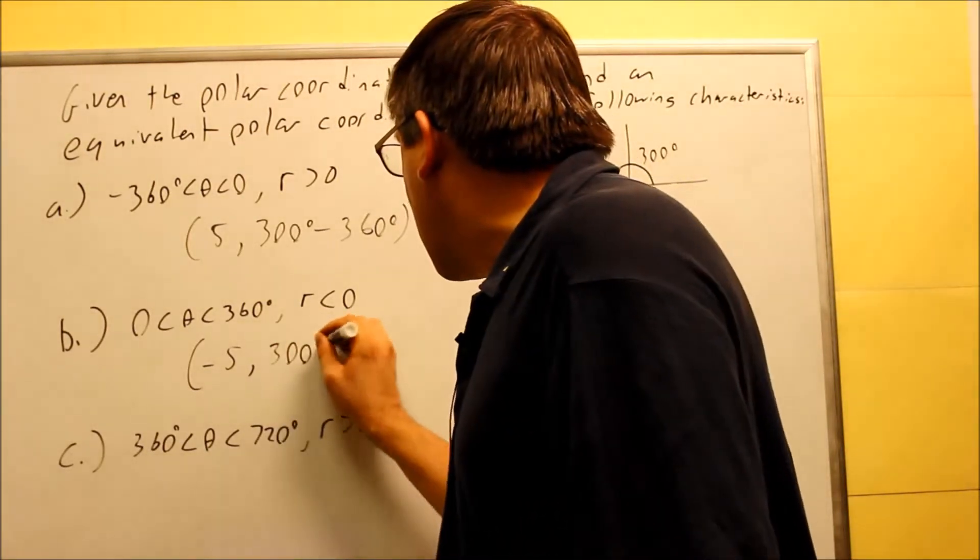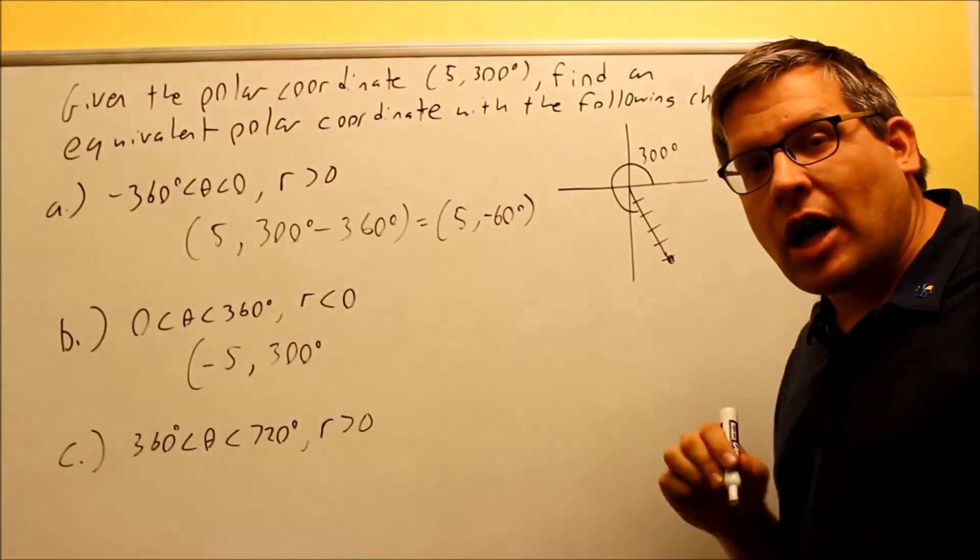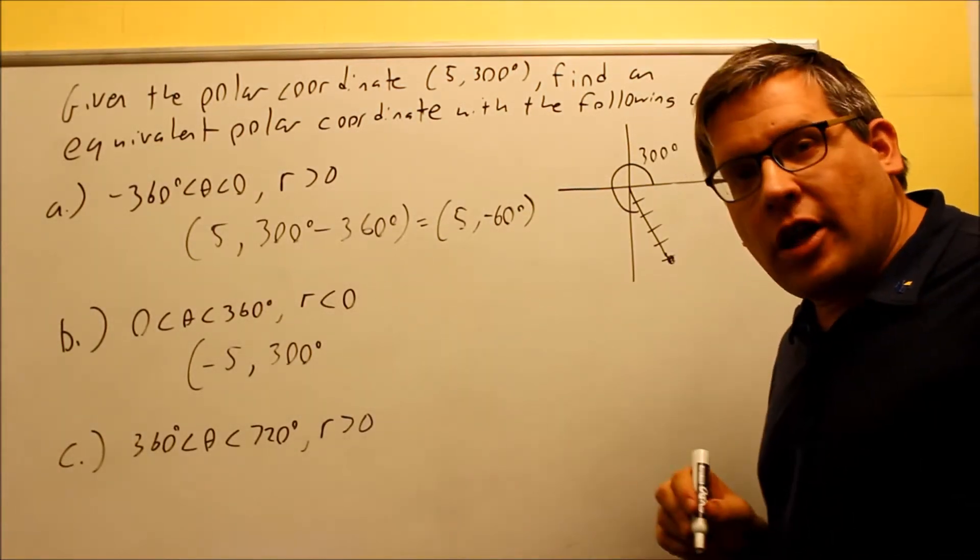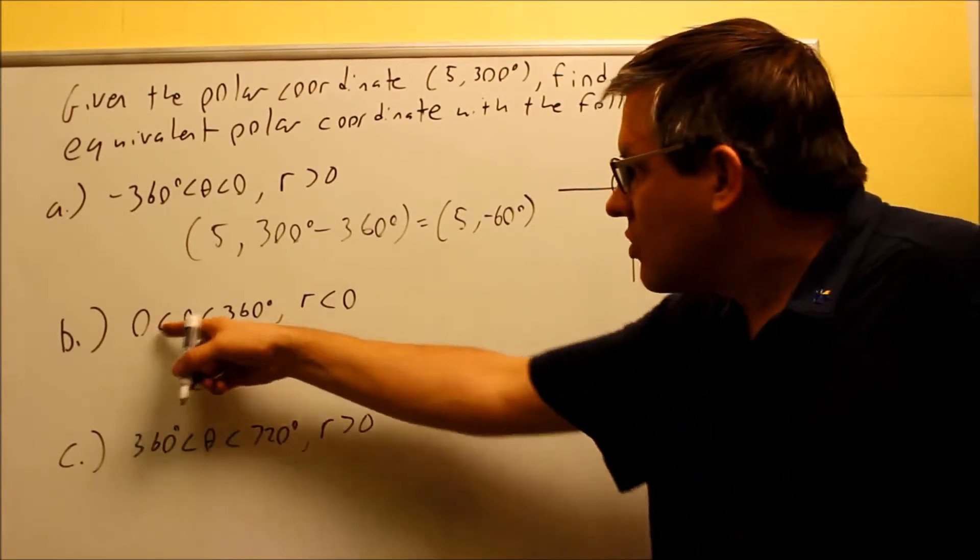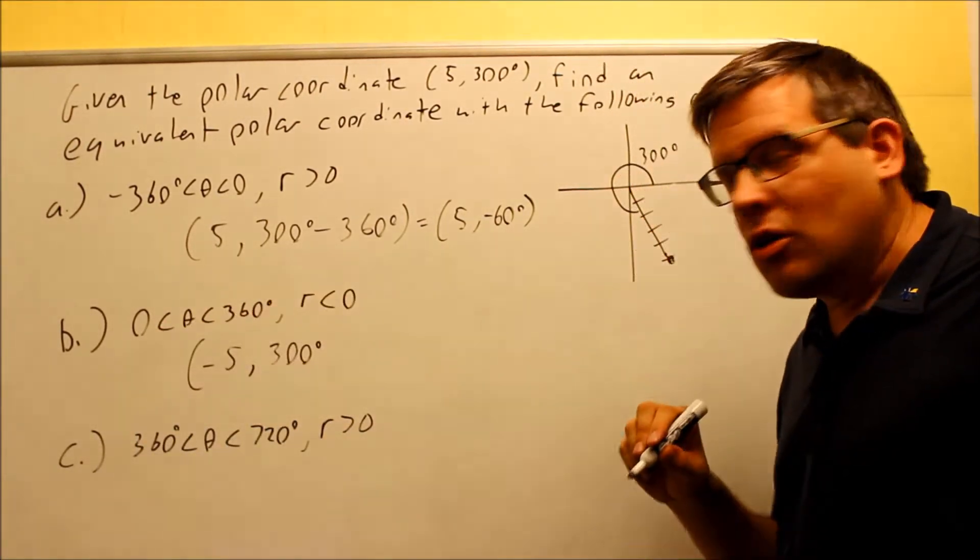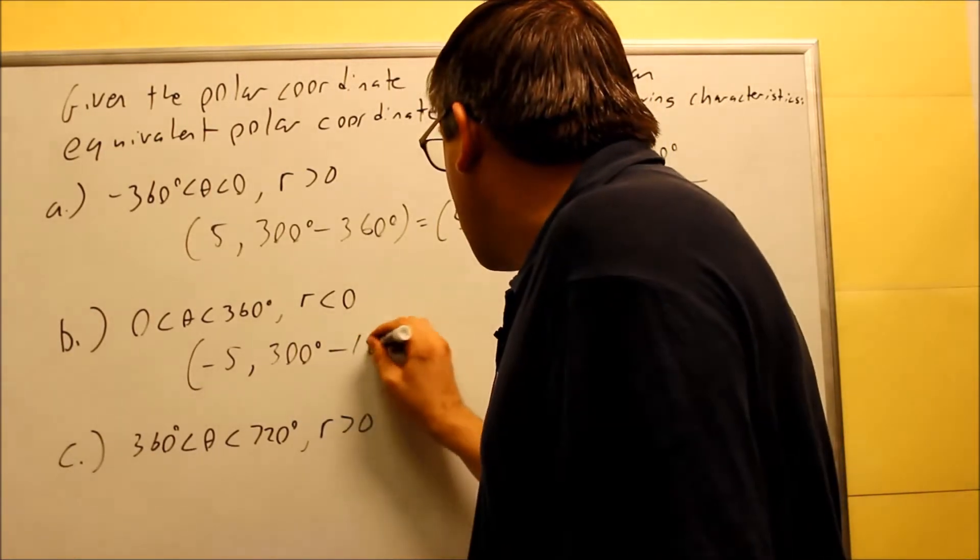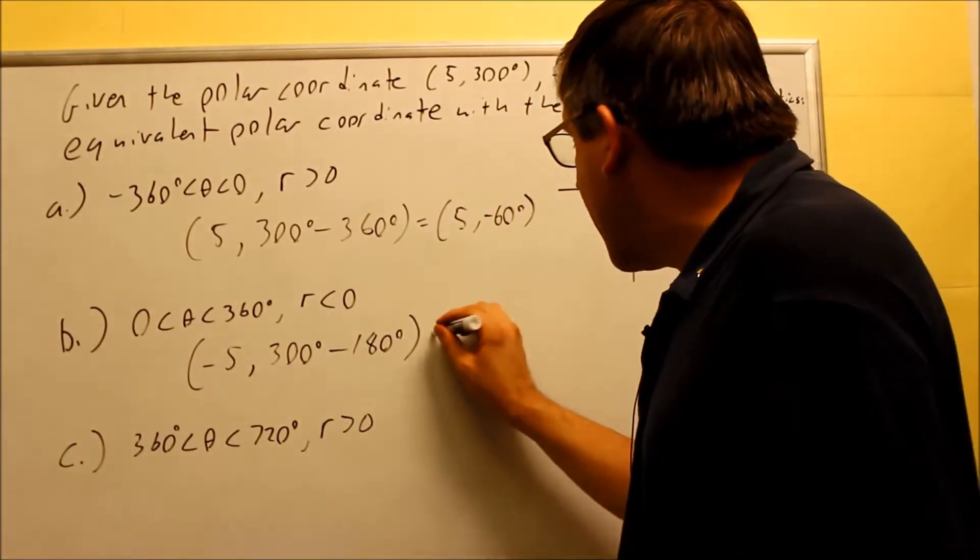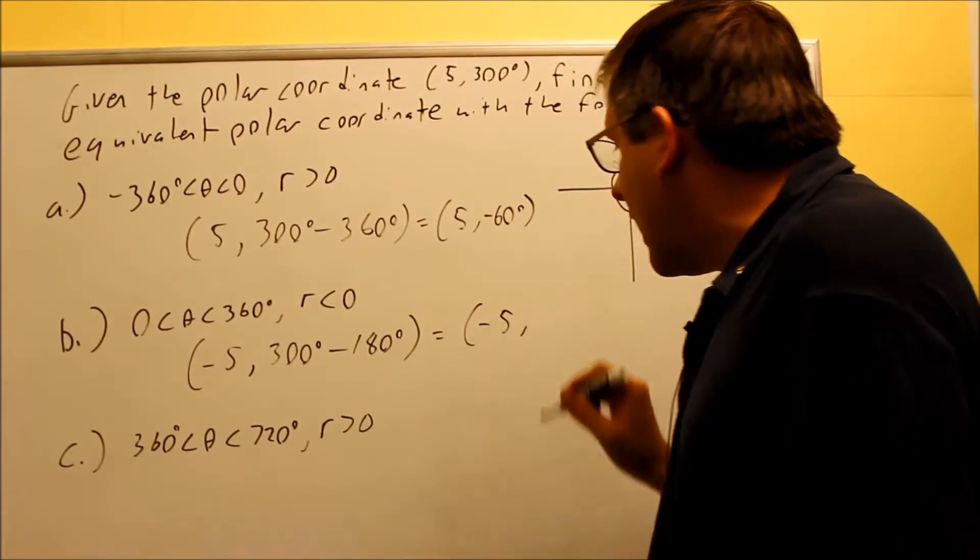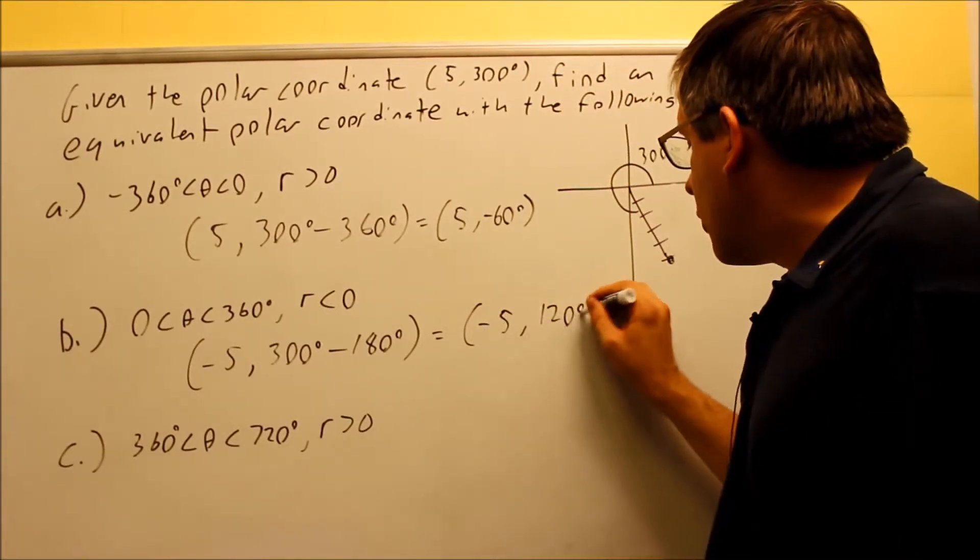So I'm starting with 300 and I need to choose to either add or subtract 180. I don't want to add 180 because then I'll get something that's more than 360. I want to choose to subtract 180 to allow me to get something between 0 and 360. So I'm going to subtract 180 from it there. So now when I do that, I get negative 5 and I'll get 120 degrees.